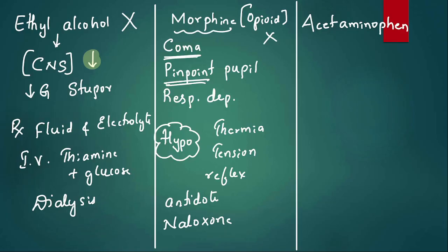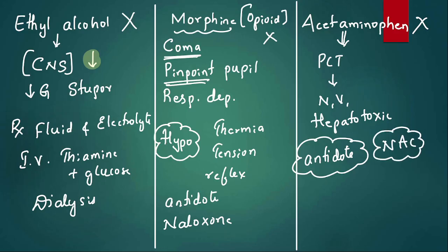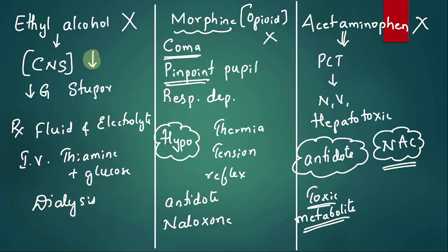Coming to acetaminophen (paracetamol): overdose presents with nausea, vomiting, and abdominal pain due to hepatotoxic effects. There is no specific pupil finding, so acetaminophen is also ruled out. The antidote for acetaminophen overdose is N-acetylcysteine (NAC). Tell me in the comment section: what is the toxic metabolite produced in paracetamol overdose, and what is the rationale for giving NAC?